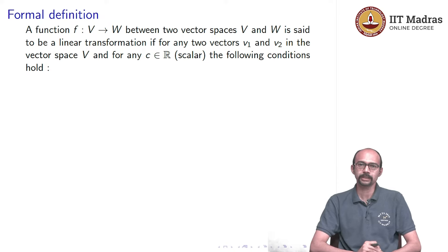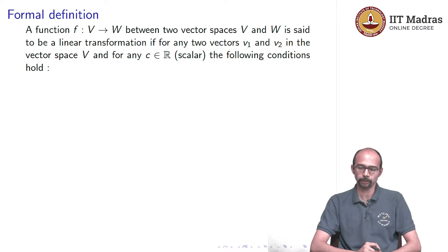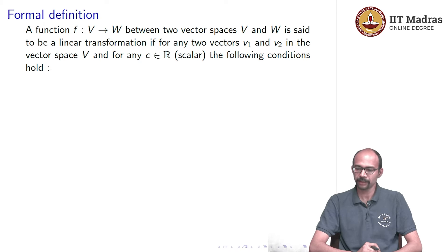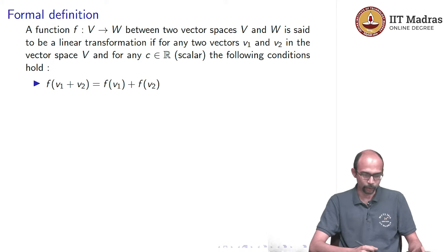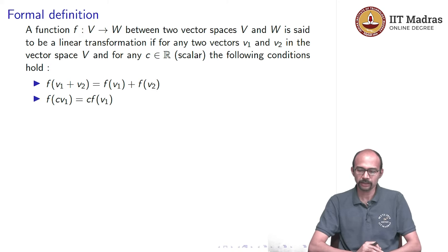Let us define what is a linear transformation. A linear transformation has the same properties as a linear mapping, but for arbitrary vector spaces V and W instead of R^n and R^m. We say a function f from V to W is a linear transformation if for any two vectors v1 and v2 in V, and any scalar c in R, the following conditions hold: f(v1 + v2) = f(v1) + f(v2), and f(c·v1) = c·f(v1).